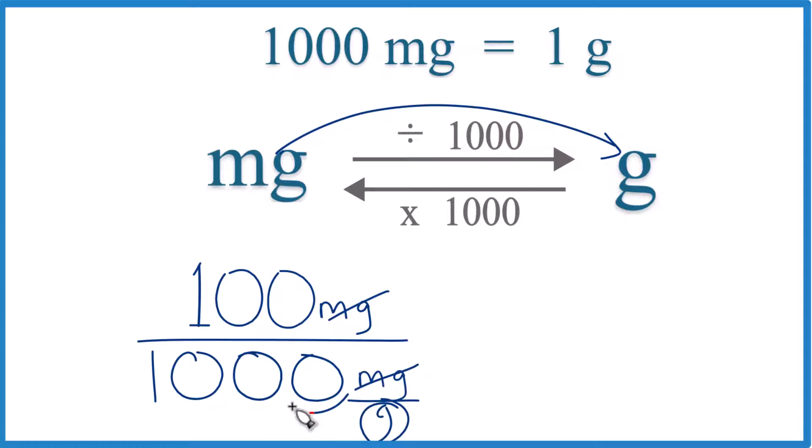Let's just move our decimal place 1, 2, 3. So now we're just dividing by 1 here. And up here, 1, 2, 3.